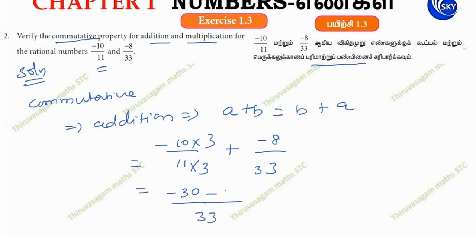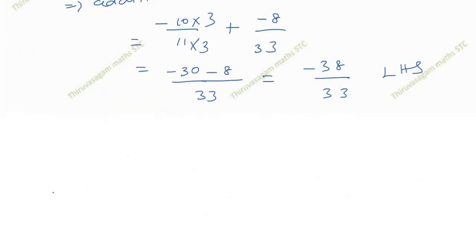Minus 8, so minus 30 minus 8 over 33 equals minus 38 over 33. This is LHS. Let's find out the RHS next.